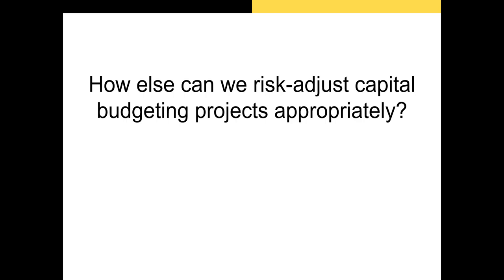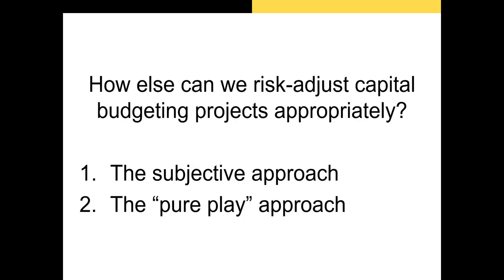Now let's switch gears and discuss how we can estimate the discount rate for capital budgeting projects. I'll discuss two techniques. The subjective approach involves knowing a firm's WACC and adjusting it upward or downward to get a hurdle rate for capital budgeting projects. The pure play approach involves using the beta of firms that are purely in the industry that our firm is considering investing in via its capital budgeting project.